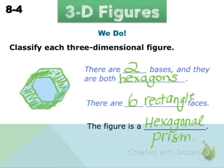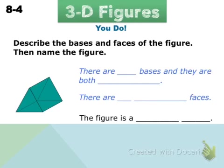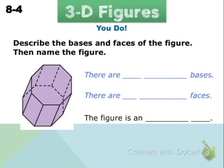Now I'd like you to try two on your own. Count the bases, figure out what shape they are, and then look at the faces. Decide if they're triangular or rectangular and come up with a name for the figure. Be sure to count the number of sides — this one might be a little tricky if you're not sure what all the different polygon names are.